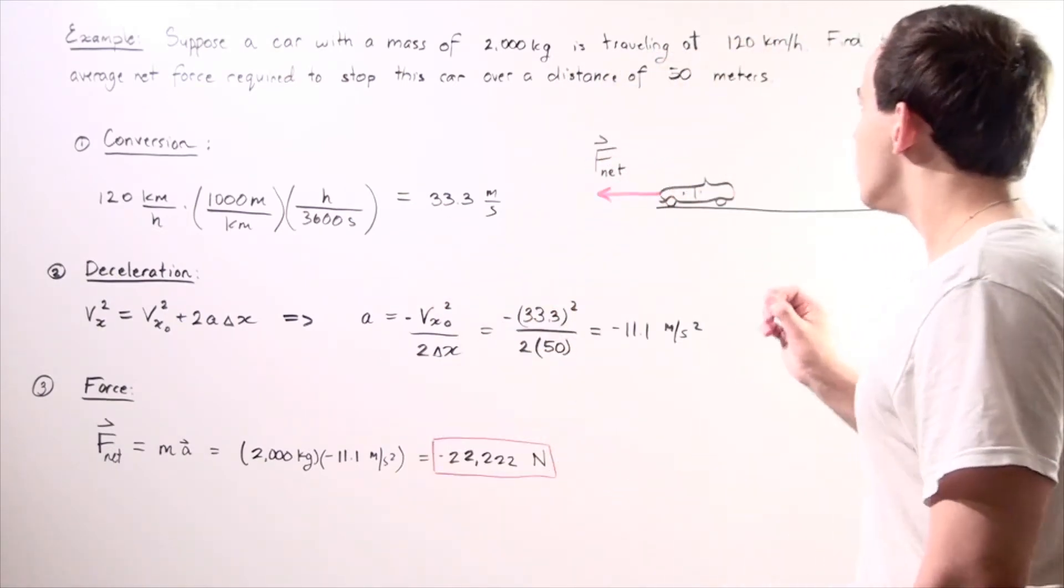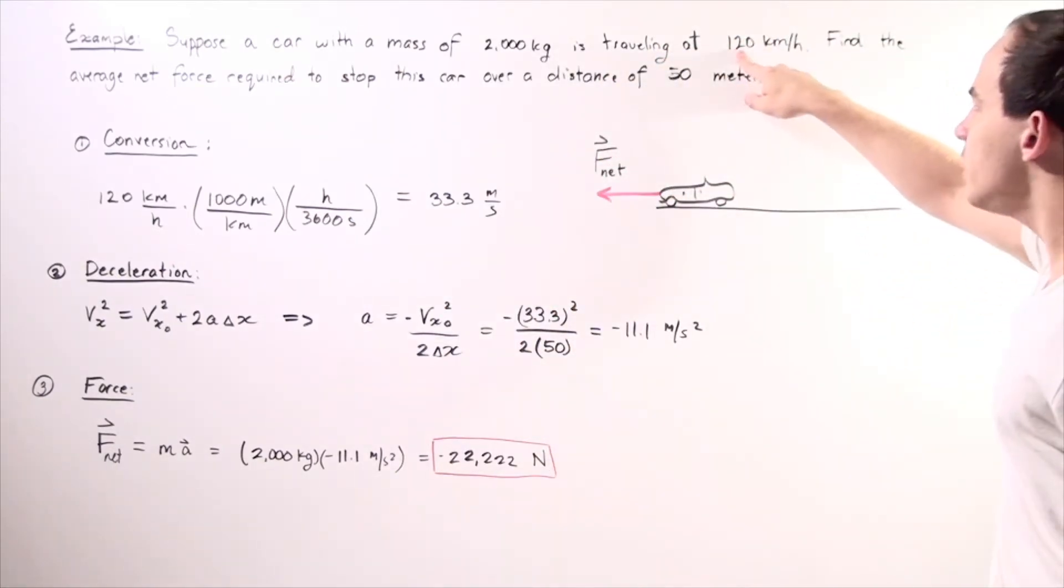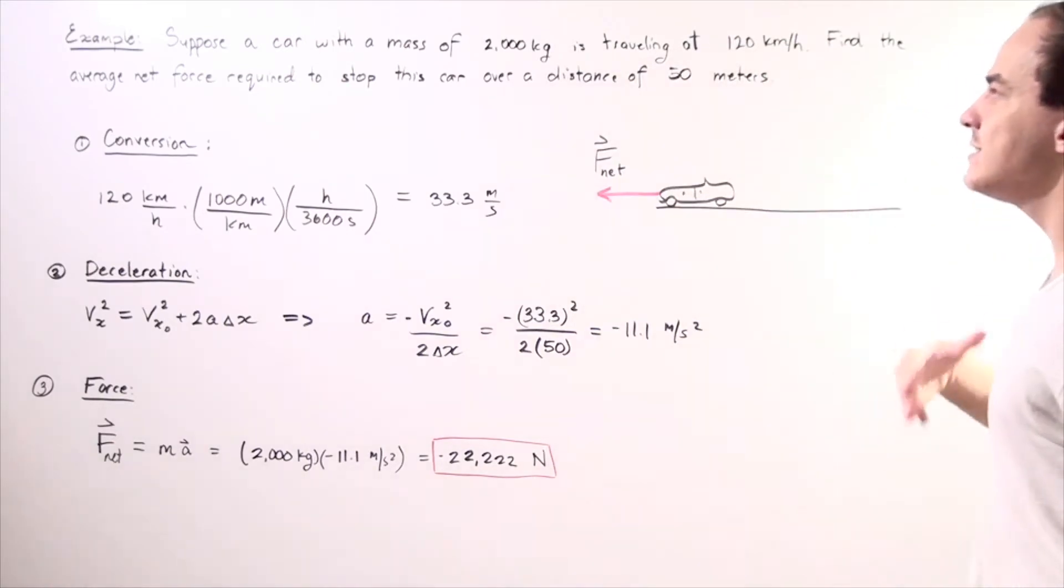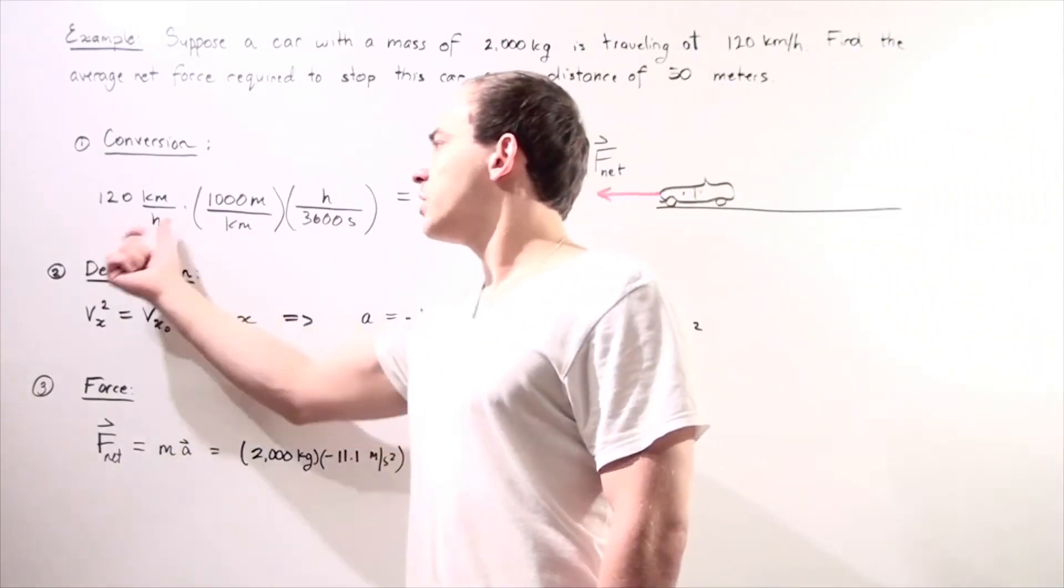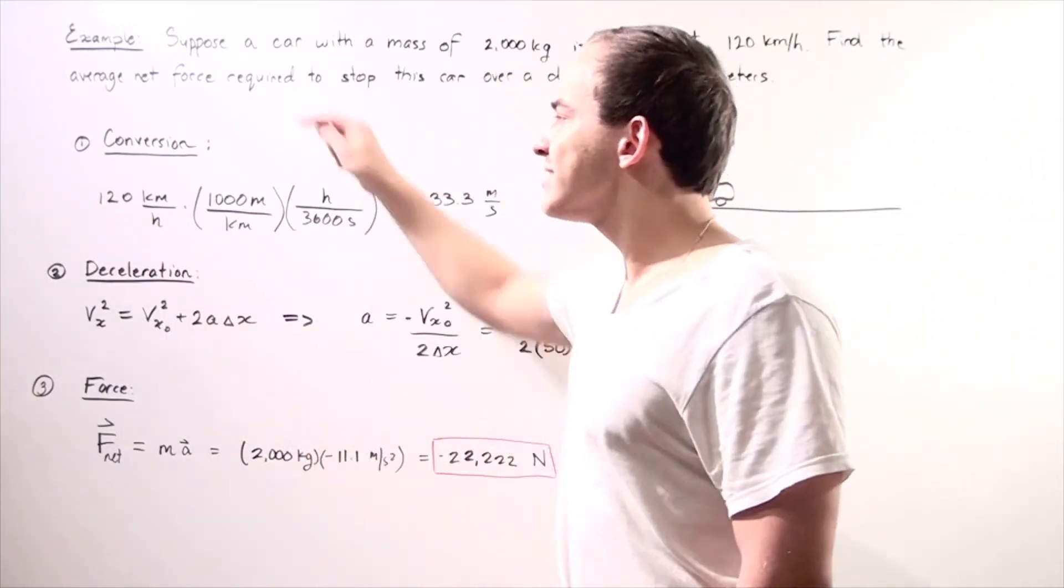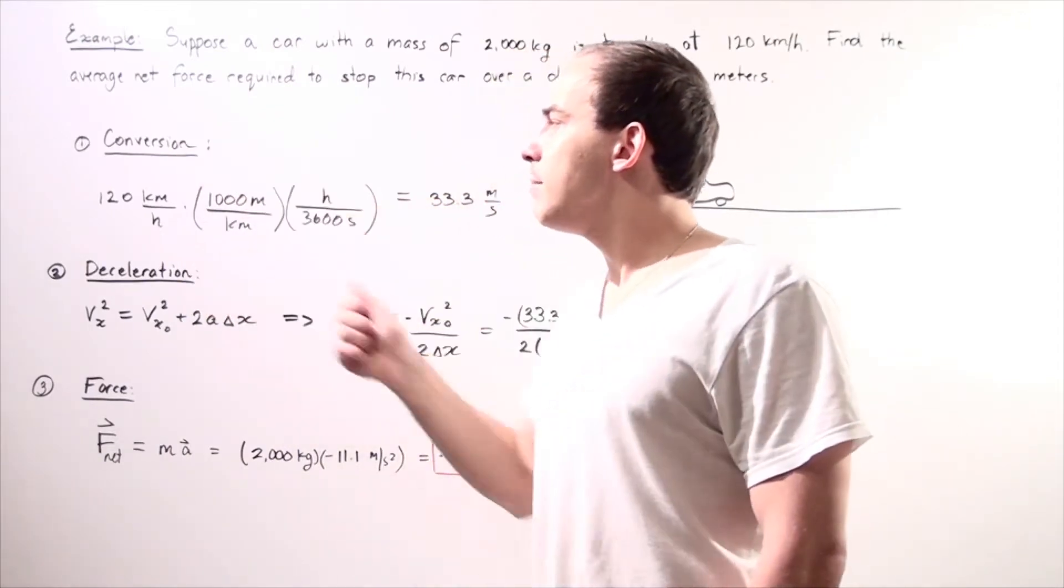In our first step, we want to convert the 120 kilometers per hour into meters per second because our distance is given in meters. So in order to convert our 120 kilometers per hour, we want the top to become meters and the bottom to become seconds.